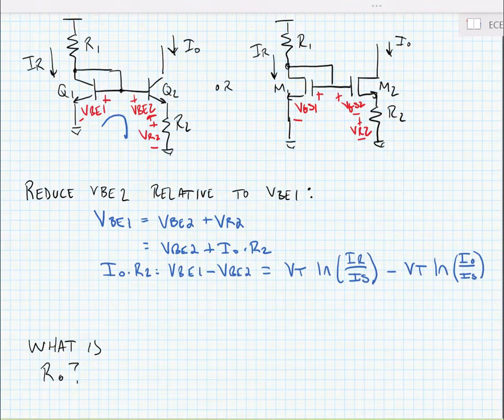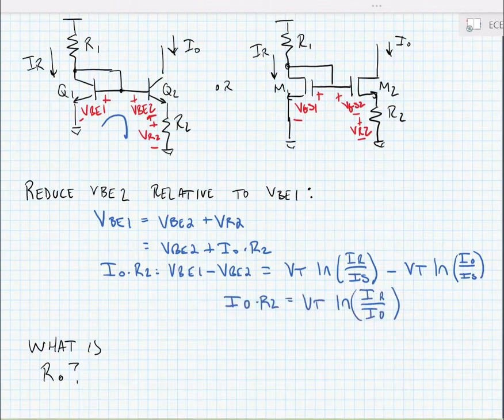Here, IOUT times R2 equals VT ln(IR/IS) minus VT ln(IOUT/IS). We can further simplify this if we assume transistors Q1 and Q2 are equal, so the saturation currents IS are equal. We can combine the natural logarithms: IOUT times R2 equals VT times ln(IR/IOUT).